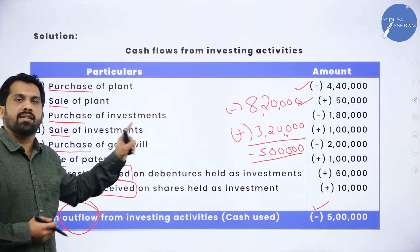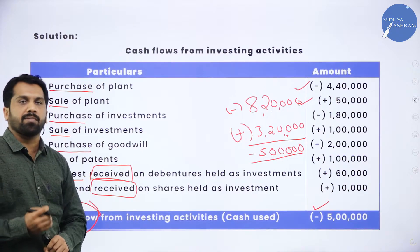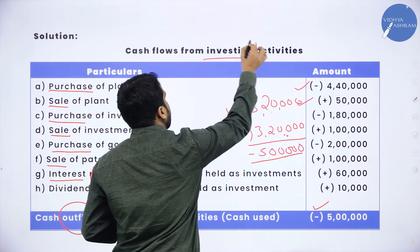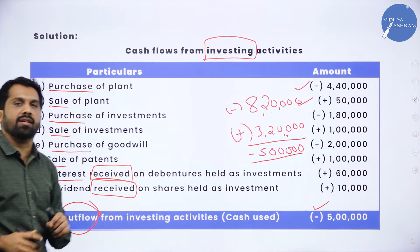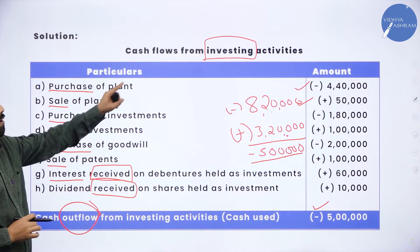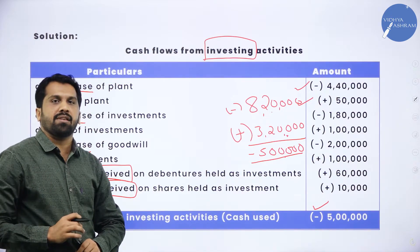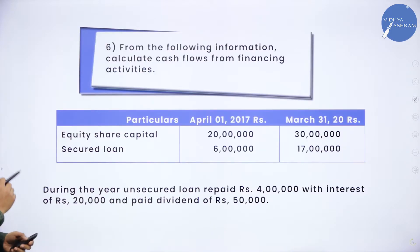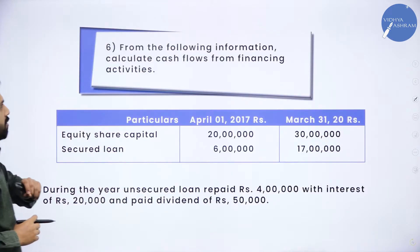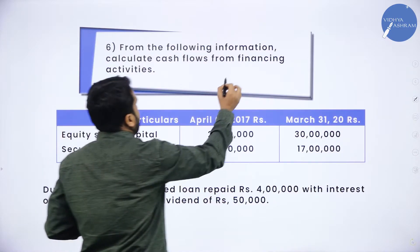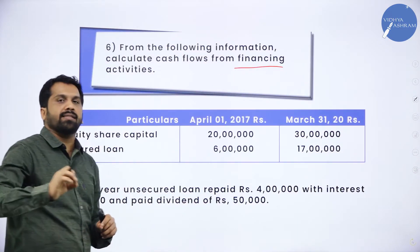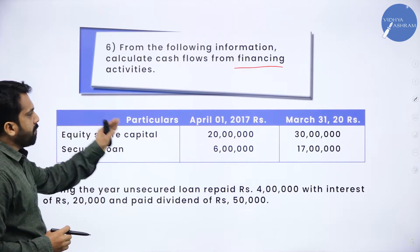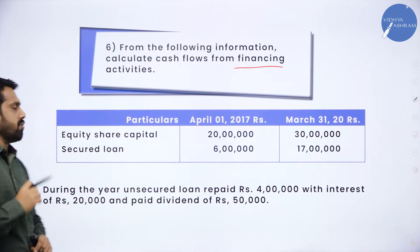That is your complete 6-mark problem — a previous year question paper problem. This is investing activity, so you have to mention: cash flow from investing activity. Now moving to the next problem: from the following information, calculate cash flow from financing activity.